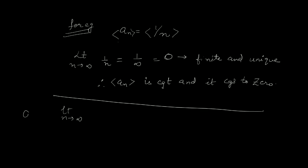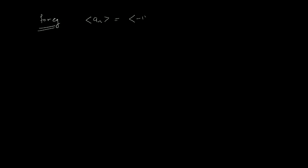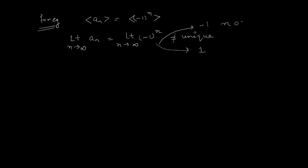Now just see one more example. Let's suppose we have to check the behavior of the sequence An = N². We find the limit as N approaches infinity, which will be infinity — not finite. Therefore, our sequence is not convergent. One more example: let An = (-1)^N. We find the limit as N approaches infinity of (-1)^N. This limit does not exist because it is not unique — it approaches 1 or -1 depending on whether N is odd or even. Therefore, the sequence is not convergent.